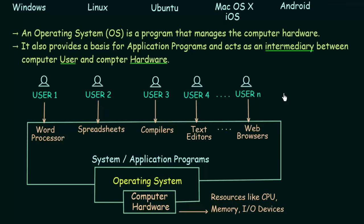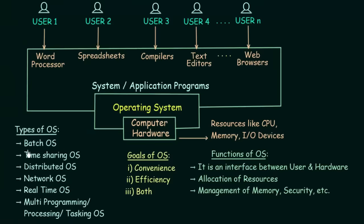We will now see some types of operating systems. First is batch operating system, then time-sharing operating system, distributed operating system, network operating system, real-time operating system, and multiprogramming, multiprocessing, and multitasking operating systems. These are some of the main types. Don't worry if you don't understand them - I will do another lecture explaining all types clearly. They perform in different ways based on the need we have.